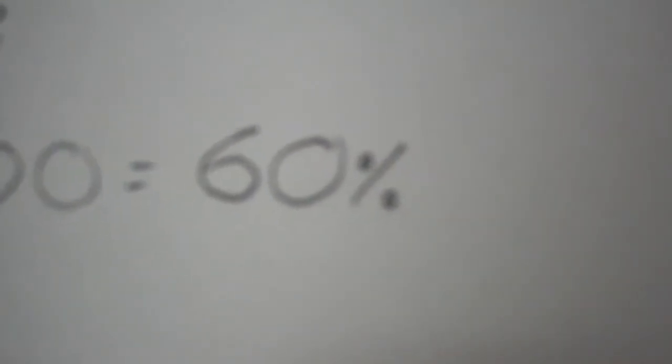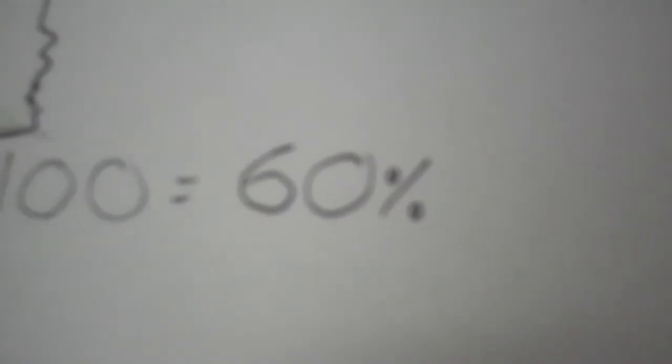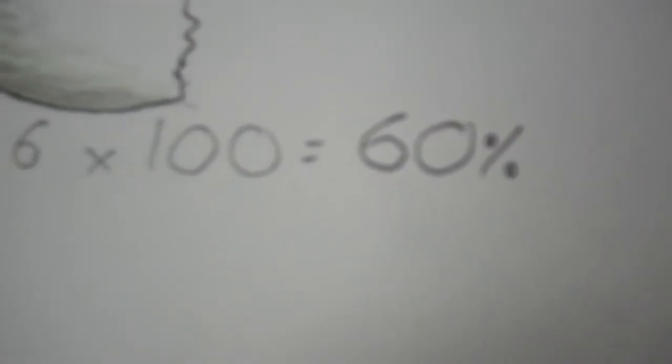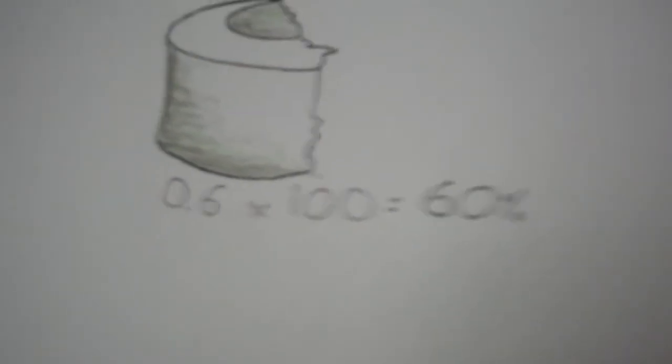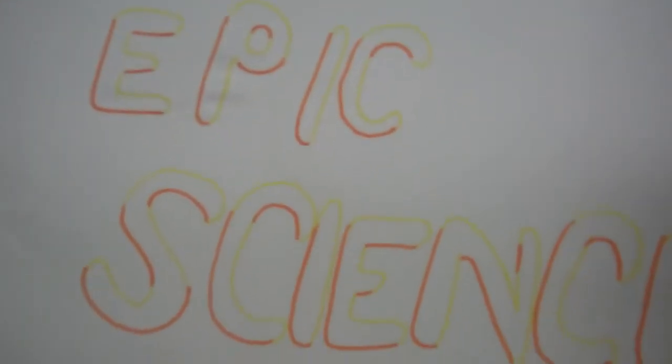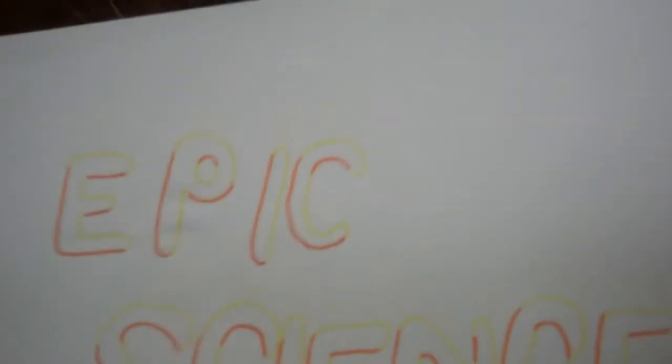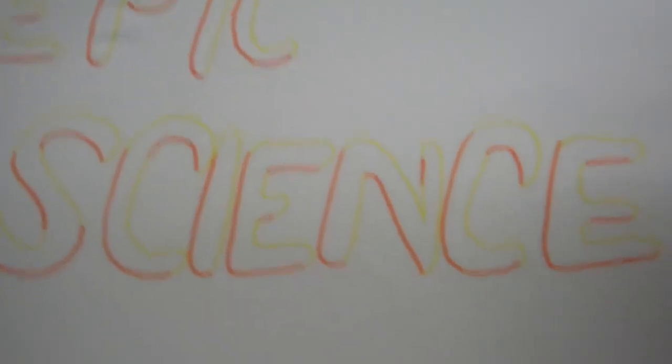Which means that magnesium's percentage mass is 60 percent. So then if we do 16 divided by 40, that would be 0.4, and times by 100, so oxygen's percentage mass would be 40 percent.